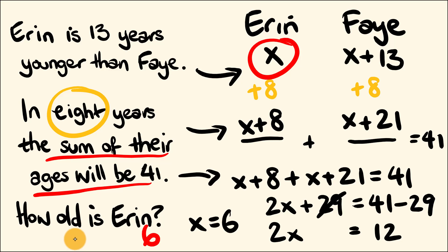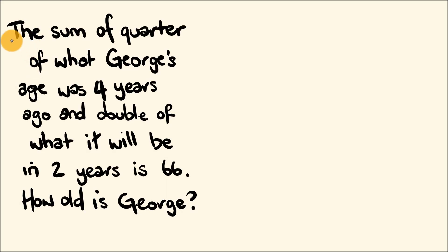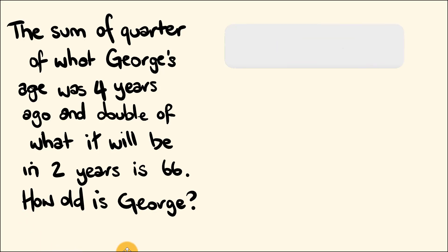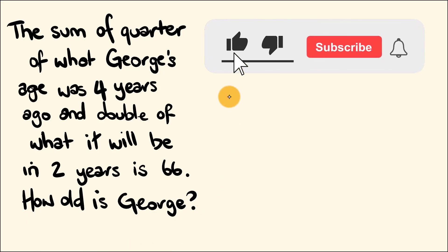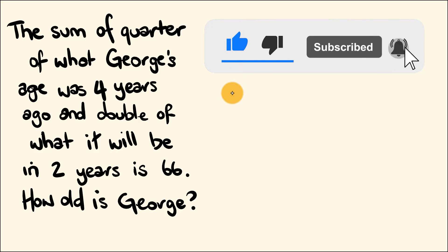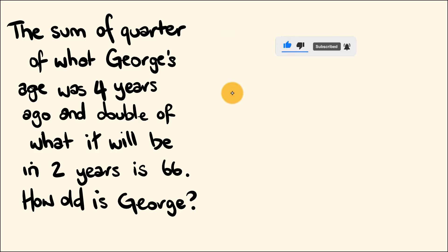Let's have a look at one last example. The sum of a quarter of what George's age was four years ago and double of what it will be in two years is 66. How old is George? Why don't you pause the video and give this one a go — and while you're at it, hit the like button and leave a comment telling me how you went.